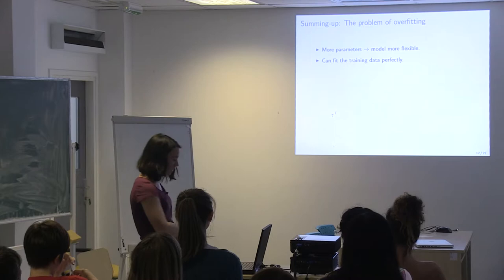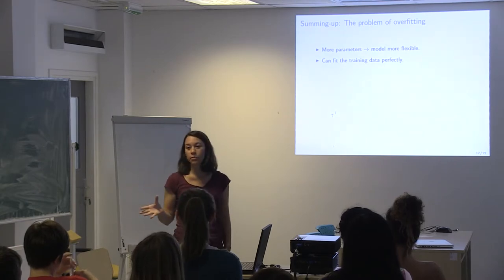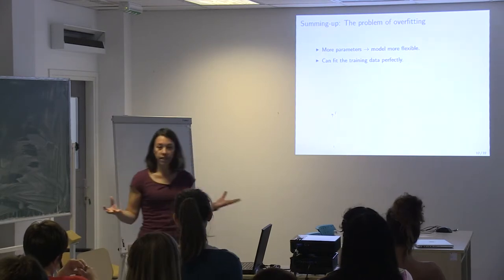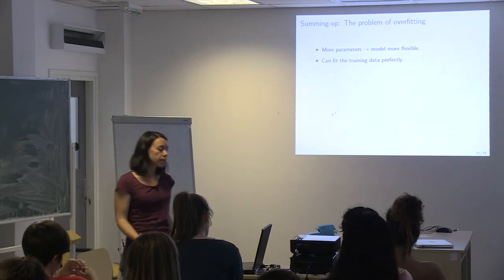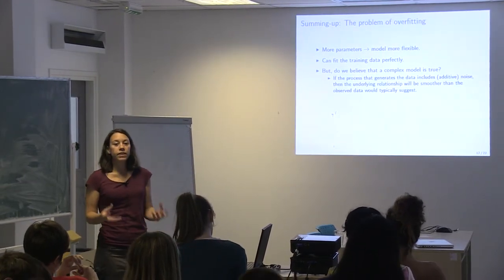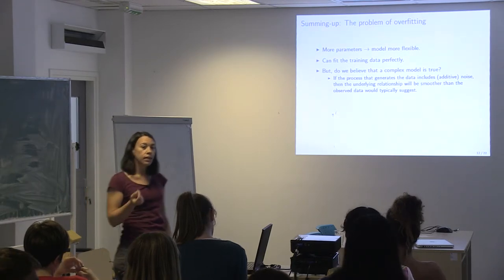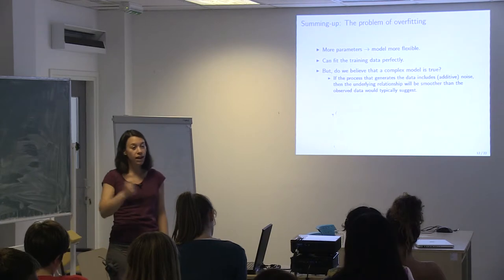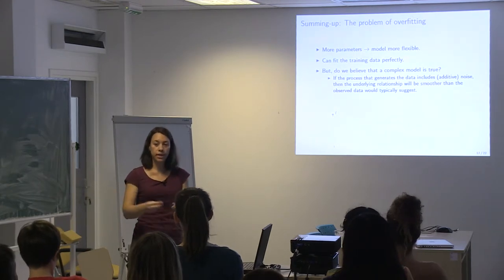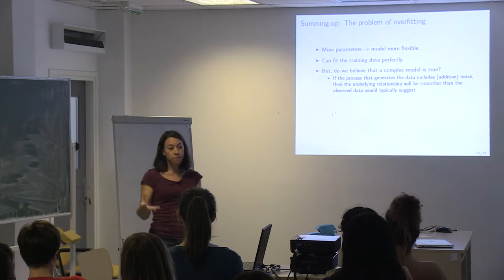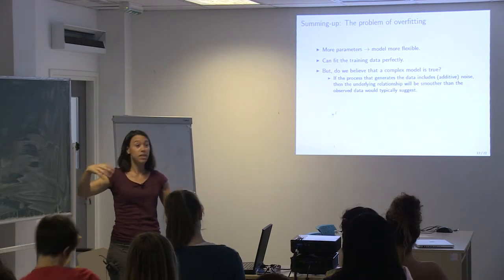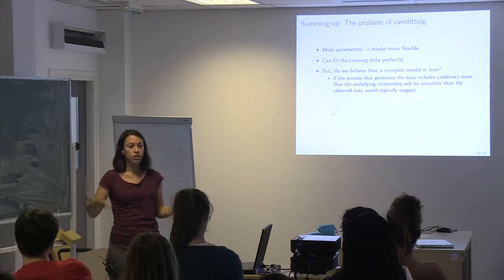That's what overfitting looks like: we have 11 data points, we're fitting seven parameters, and we can almost exactly fit every data point. We can see all the different polynomial orders — linear, squared, cubic, up to seventh. If we believe our observations contain noise, the underlying process should be smoother than what we observe, because what we observe has measurement noise, observation noise, or sample noise.